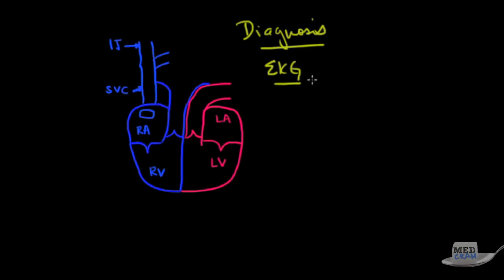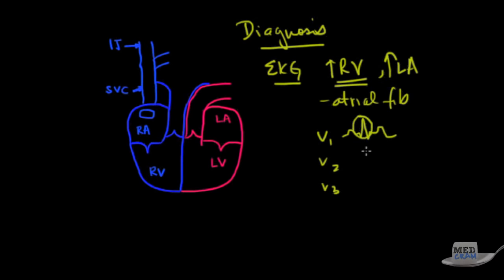Okay, let's talk about diagnosis. On EKG, what you'll see is enlargement of the RV and the left atrium. And you might see atrial fibrillation. So what do you see with an RV? If you look at the precordial leads like V1, V2, V3, you're going to see that the QRS complexes are going to be large. So think about right ventricular hypertrophy, the QRS complexes are going to be large in the precordial leads.